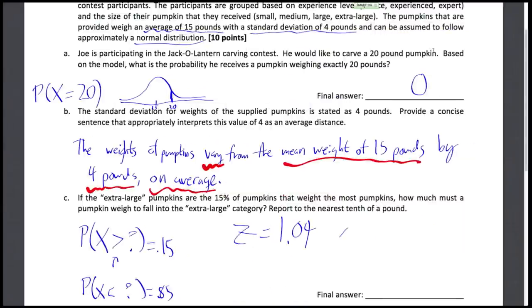Okay. So X is equal to Z times sigma plus mu. So X is equal to 1.04 times 4 plus 15. And that's equal to 19.16. Of course, though, we have to report this to nearest tenth. So that's 19.2. And don't forget your units, friends. Pounds.